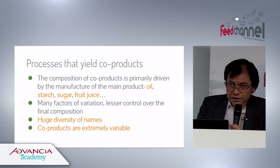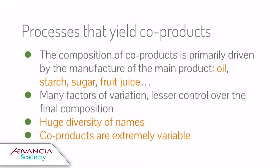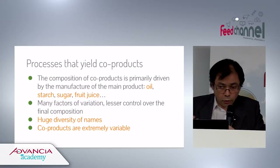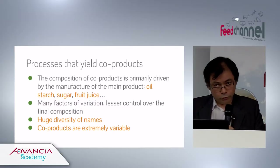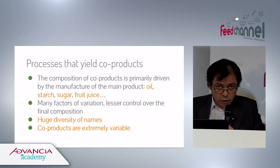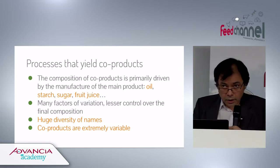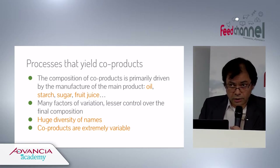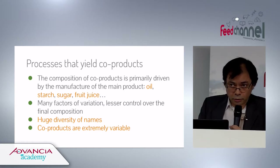For processes that yield by-products, the composition of co-products is primarily driven by the manufacturer of the main product. What people target is a yield of oil, starch, sugar, or fruit juice — and the co-product is more often than not a secondary product. The target is on the oil or the sugar, not on the co-product.